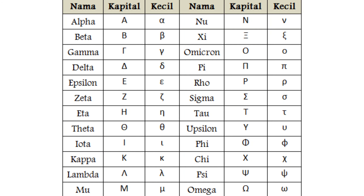Pertama ada huruf yaitu Alpha, dan di sana sudah tertera huruf besar dan huruf kecilnya, jadi bisa dilihat antara huruf kapital dan huruf kecilnya. Kemudian Beta, Gamma, Delta, Epsilon, Zeta, Eta, Theta, Iota, Kappa, Lambda, Mu, Nu, Xi, Omicron, Pi, Rho, Sigma, Tau.